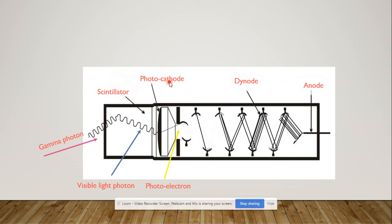The visible light photon converts into a photoelectron through the phenomenon called the photoelectric effect. In the photoelectric effect, the high-energy photon is absorbed by the atom and knocks off the outermost shell electrons. Each dynode is given an increasing potential — the first dynode has a lower potential and each subsequent one is higher.